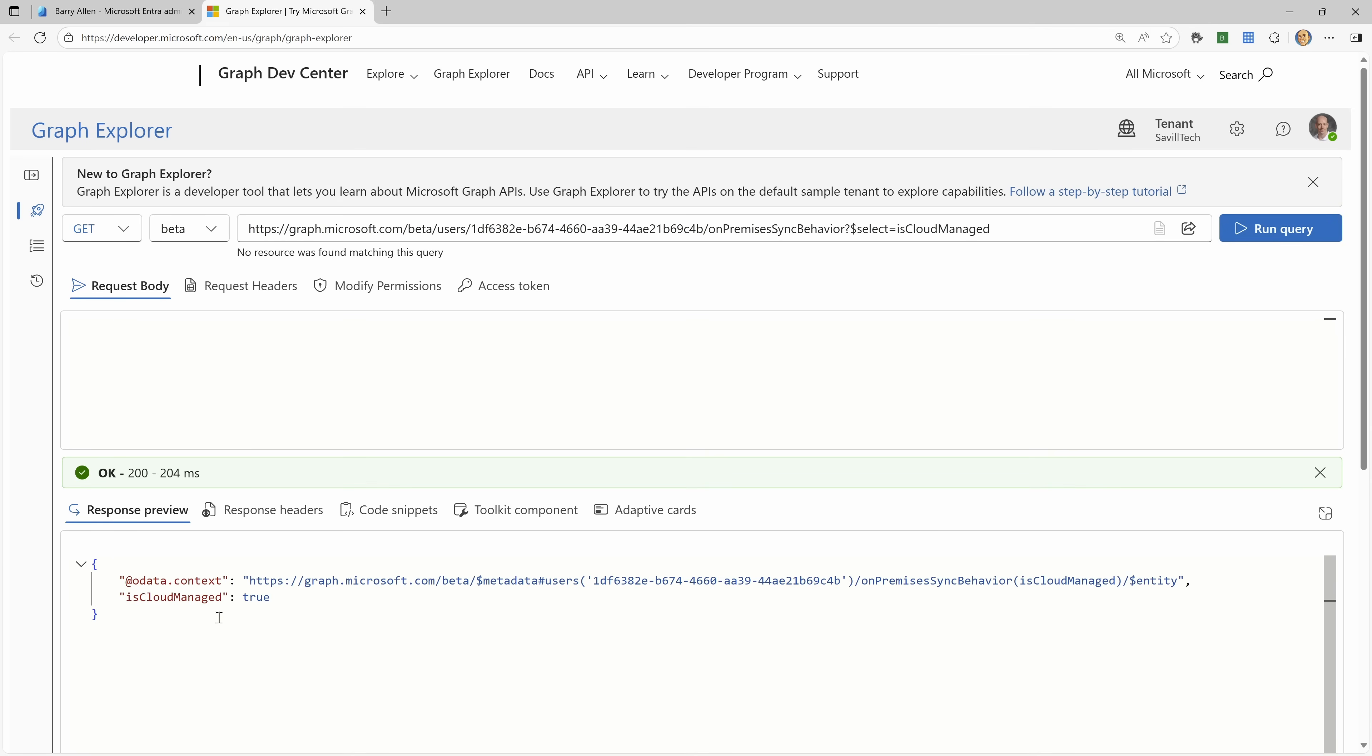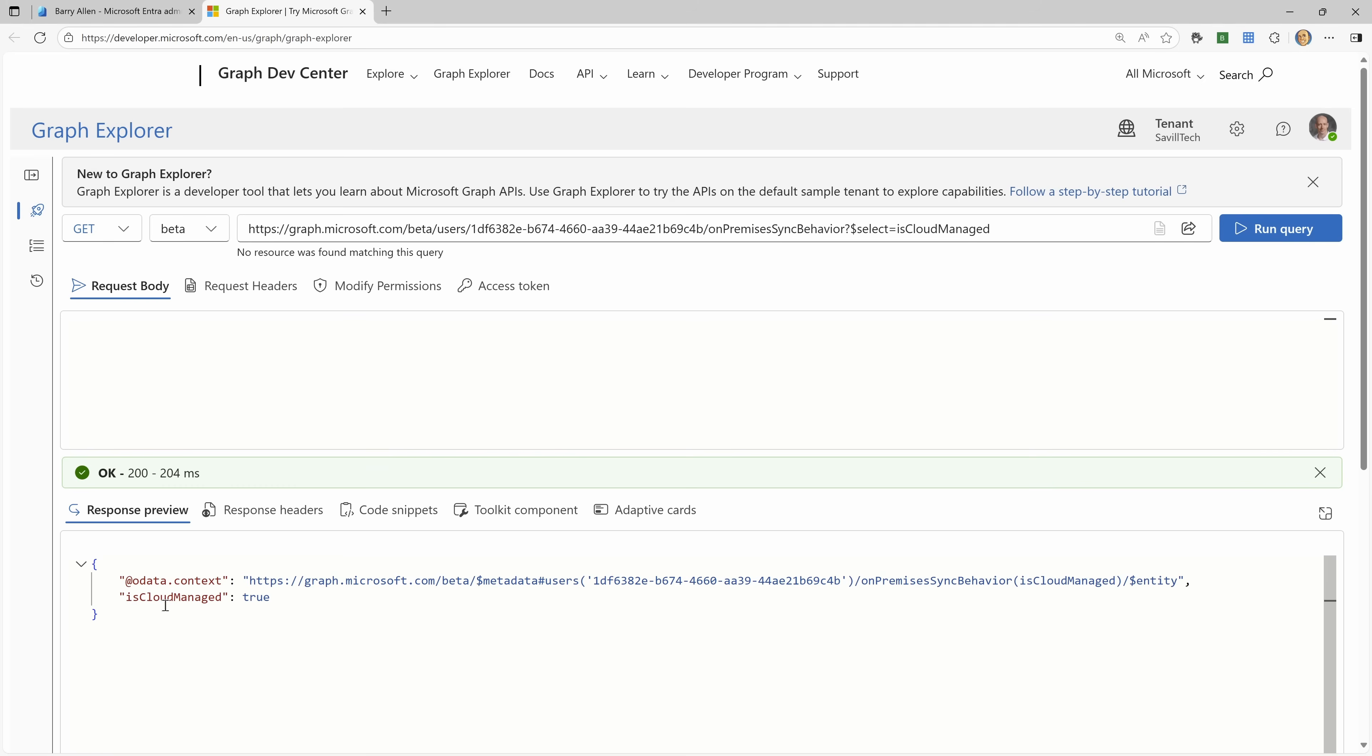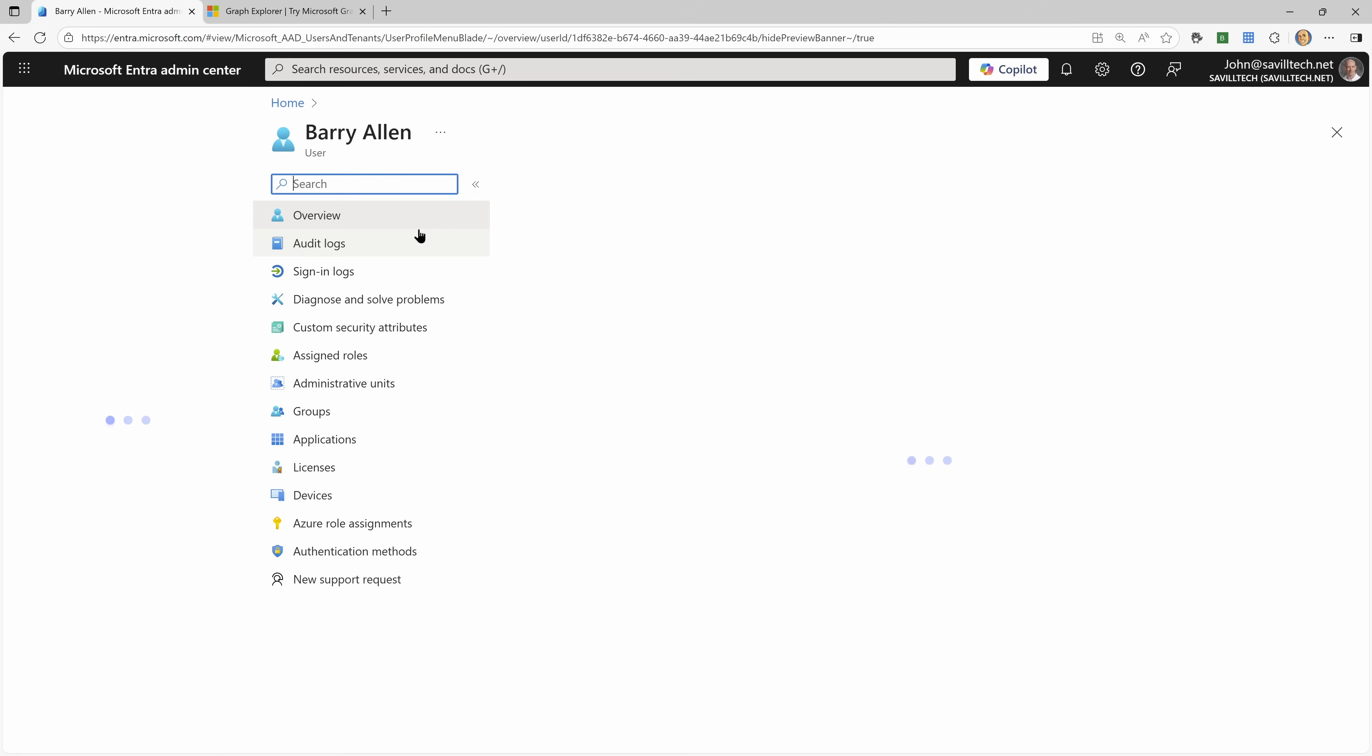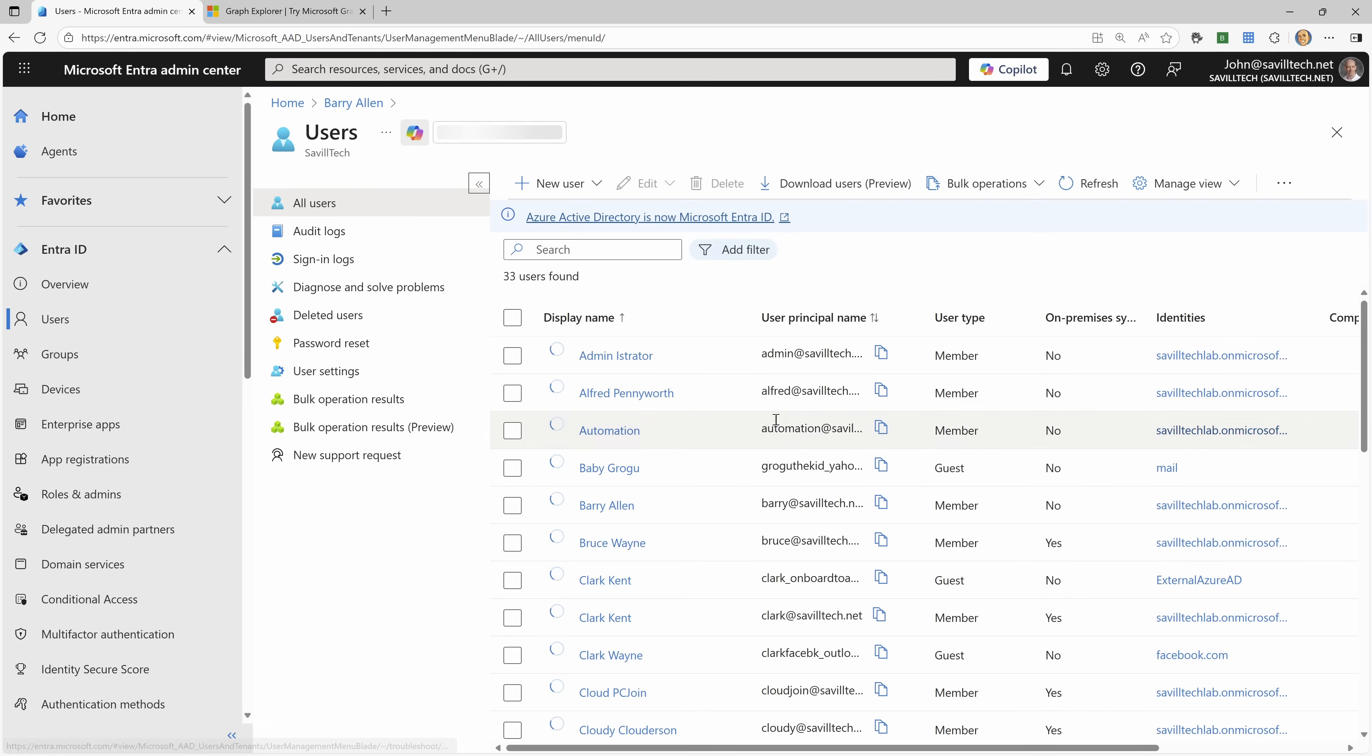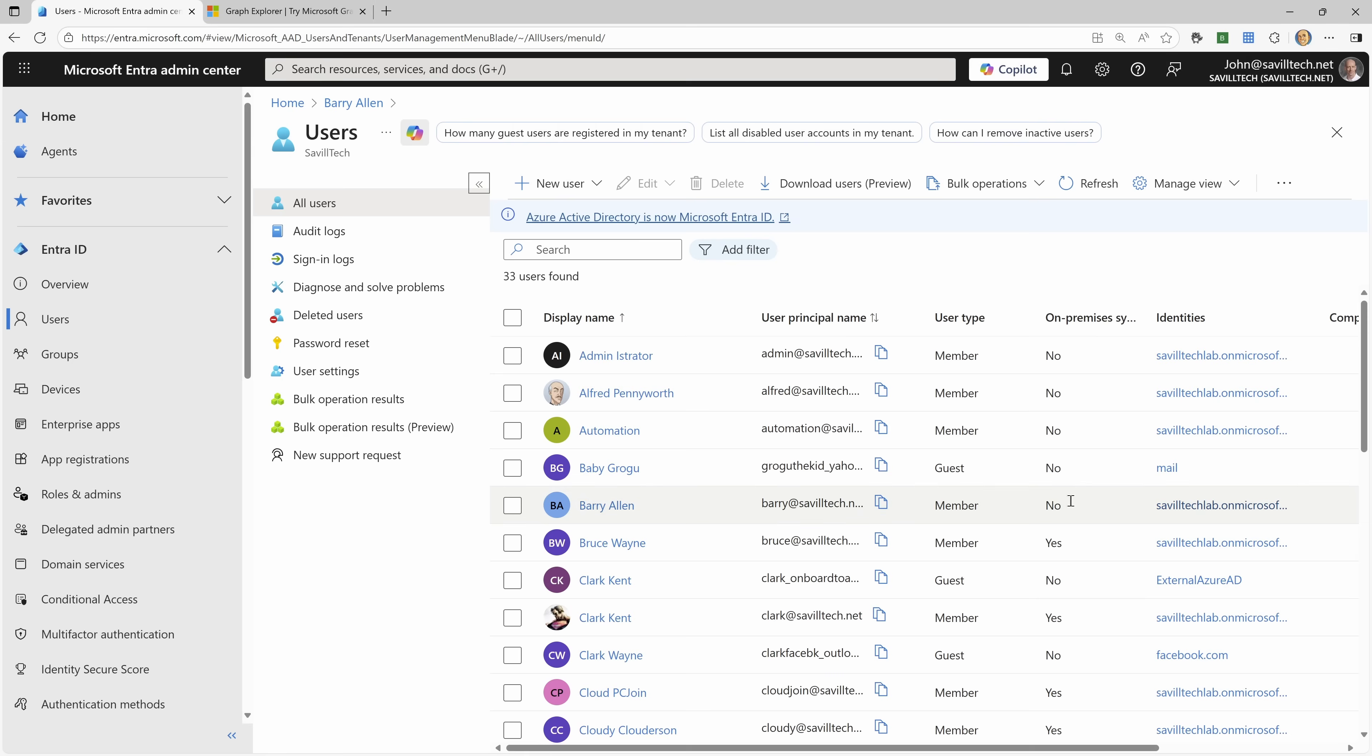And so now if I go back again, and let's do the get on this. I'm going to take out the body. So now we see the isCloudManaged is true. Now what should also happen now at this point is if I go back over to Barry, let's just refresh to be on the safe side. So firstly, Barry now shows as no, it is not on premise synced. So that has been broken.